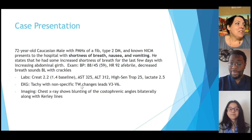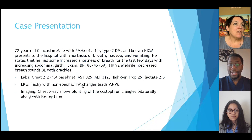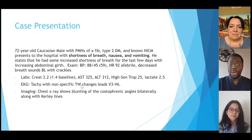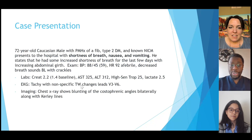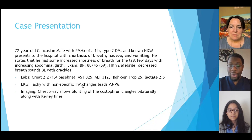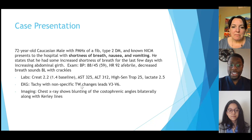This case is a 72-year-old Caucasian male with a past medical history of atrial fibrillation, type 2 diabetes, and non-ischemic cardiomyopathy that presents to the hospital with shortness of breath, nausea, and vomiting. He states he had some increased shortness of breath for the last few days with increasing abdominal girth. On exam, blood pressure was 88 over 45, a MAP of 59, heart rate of 92. He's afebrile, but there are decreased breath sounds bilaterally with crackles. On labs, creatinine was 2.2, raised from his baseline of 1.4. AST and ALT are both elevated to the low 300s. High sensitivity troponin is at 25. Lactate was elevated at 2.5. On EKG, he's tachycardic with non-specific T-wave changes in leads V3 and V6. On imaging, chest X-ray shows blunting of the costophrenic angles bilaterally along with Kerley lines.